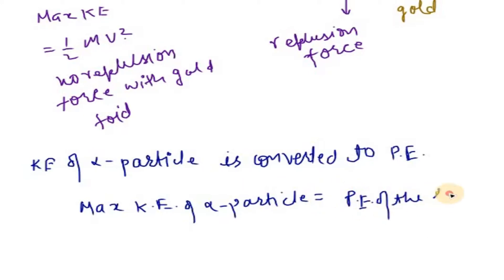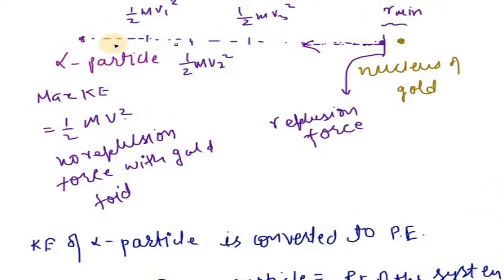Initially, the potential energy is zero because the distance is very large — essentially infinite. So the alpha particle has some kinetic energy and zero potential energy. Finally, all the kinetic energy has been converted to potential energy of the system. The kinetic energy is half mv².